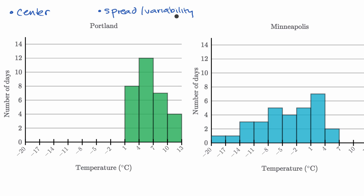When we make these comparisons, we're going to focus on the center of the distributions and also the spread — sometimes people call it variability. We're actually just going to try to eyeball it; we're not going to calculate precise measures. For center, the mean or median are valuable. For spread and variability, the range, interquartile range, mean absolute deviation, and standard deviation are all measures.